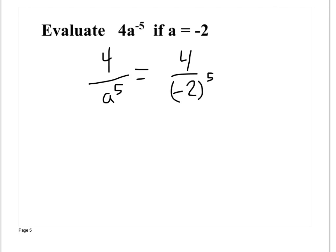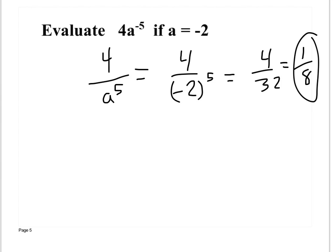Work out negative 2 to the 5th power: negative 2 times negative 2 is 4; 4 times negative 2... negative 2 times negative 2 is 4; 4 times 4 is 16; 16 times 2 is 32. So we have 4 over 32. Then reduce: take 4 out of both — 4 divided by 4 is 1, and 32 divided by 4 is 8. That gives 1 over 8.